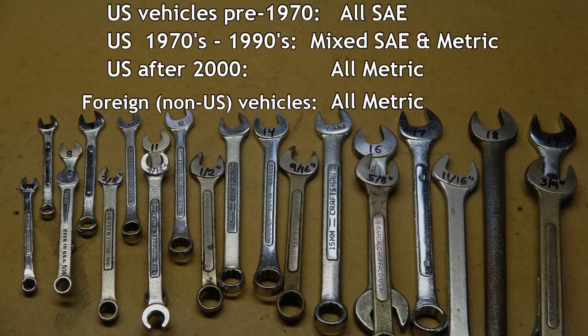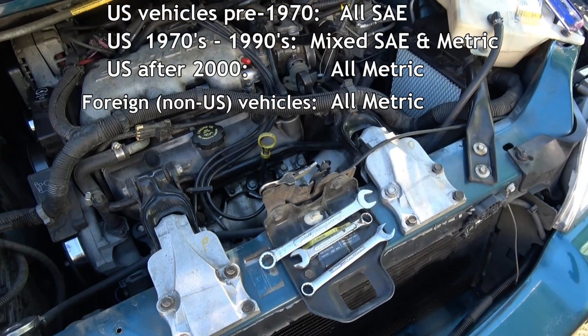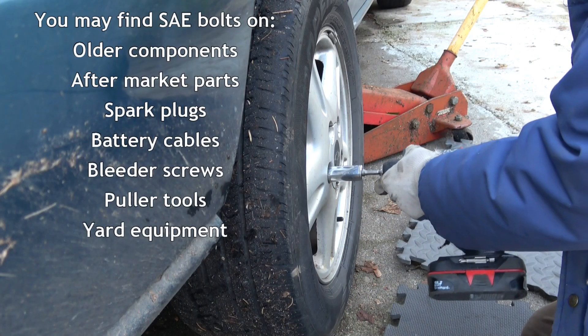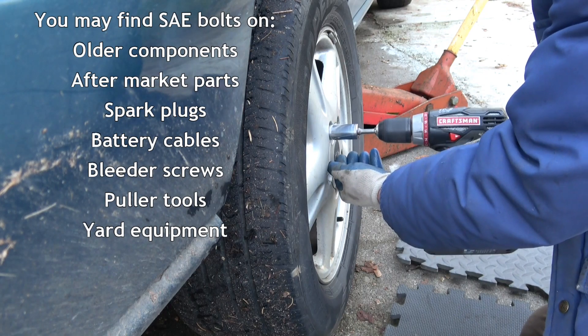Both foreign and newer US vehicles after 2000 are mostly metric, but you might still find standard bolts on older components or parts like spark plugs, battery cables, lug nuts, or bleeder screws, also tools and yard equipment.